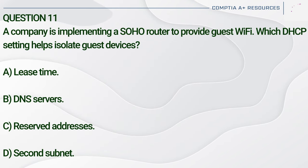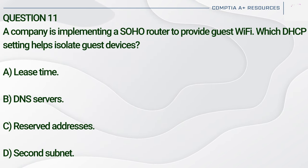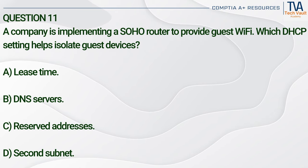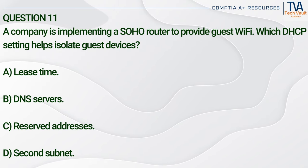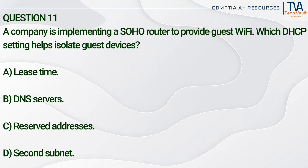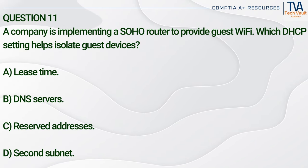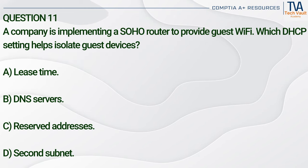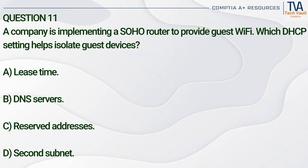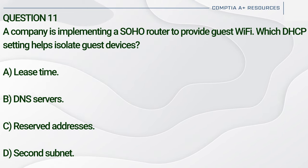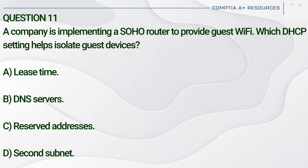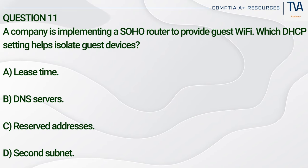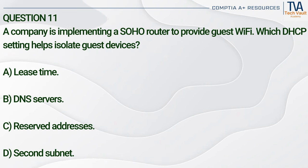Question 11. A company is implementing a SOHO router to provide guest Wi-Fi. Which DHCP setting helps isolate guest devices? A. Lease time. B. DNS servers. C. Reserved addresses. D. Second subnet.